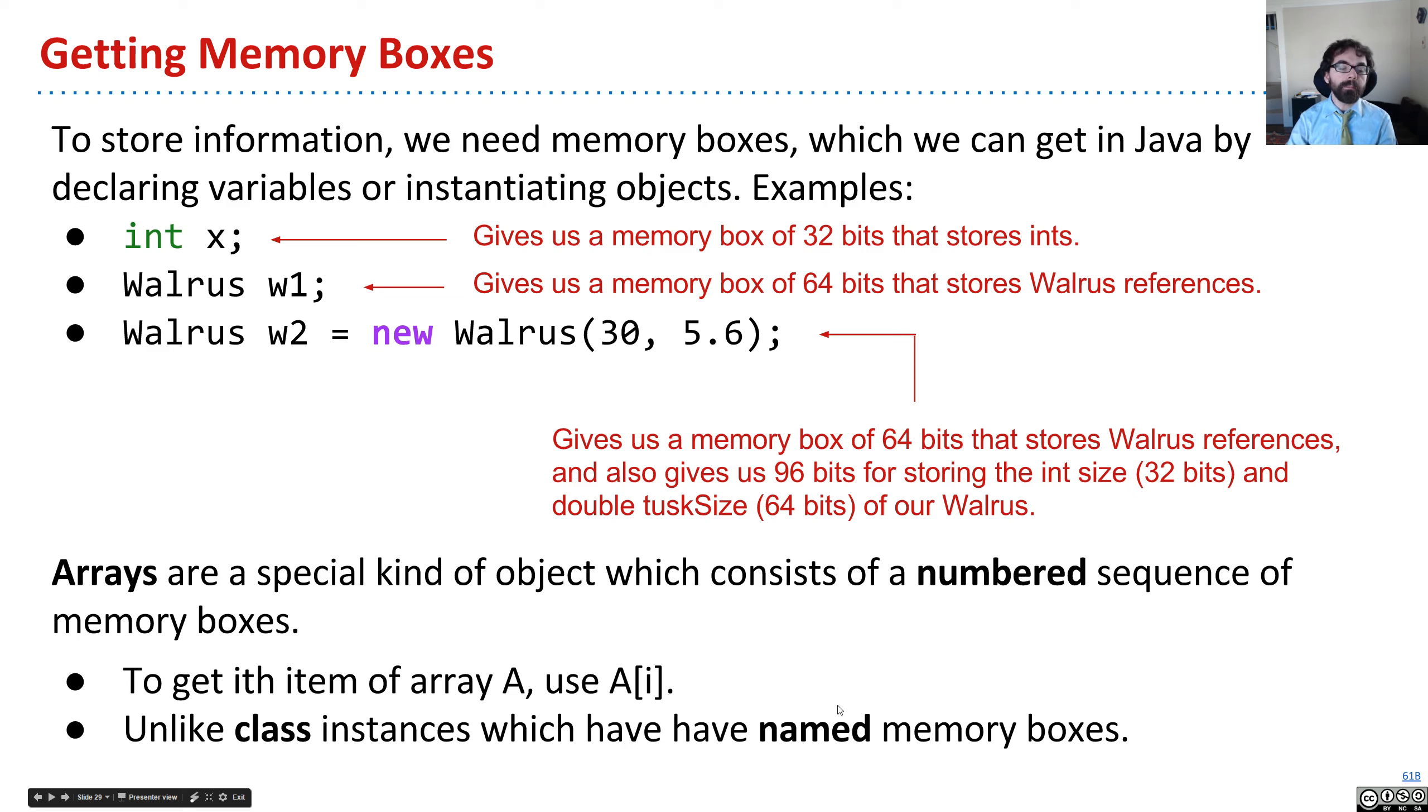And what I mean by a named set is, for example, walrus has a size which you access using dot notation, w.size or w.tusk size. With arrays, we use bracket notation. So if I want the third item of the array called a, we'll do a bracket 3. So in a sense, they have a lot of similarities with classes.